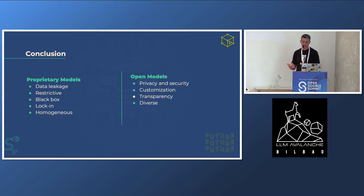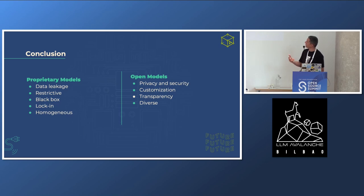As a conclusion, comparing proprietary models and open models — open models offer a whole bunch of advantages: no data leakage, privacy and security, you can customize everything, it's not restrictive, it's not a black box, it's more transparent, there's no lock-in, and it's much more heterogeneous and diverse rather than homogeneous. Open Source offers a lot of advantages.